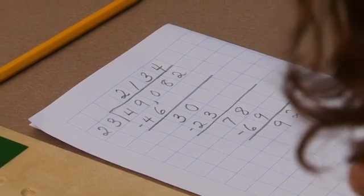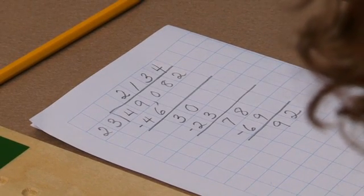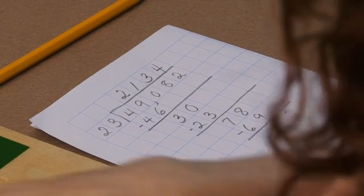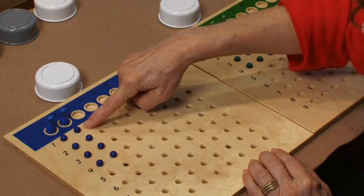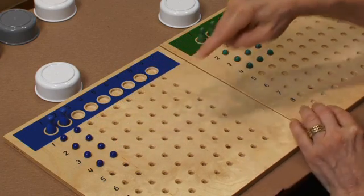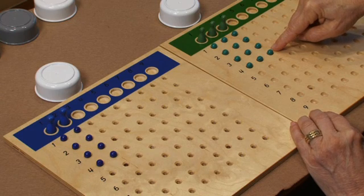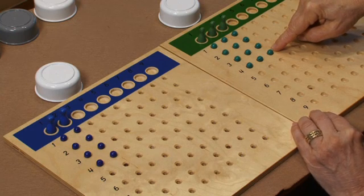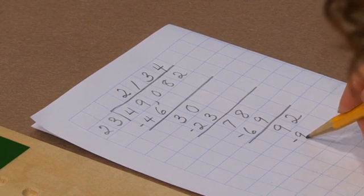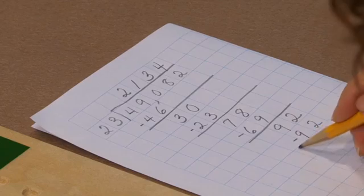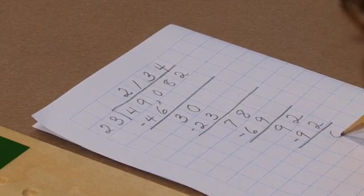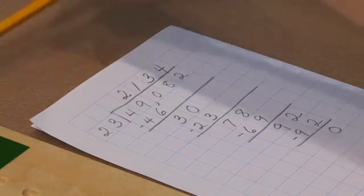So I'm going to check and see if this actually adds up to ninety-two. So I used twenty, forty, sixty, eighty, plus three, taken four times, is twelve. Eighty plus twelve is ninety-two. I had ninety-two, and I used ninety-two, and I have no remainder.